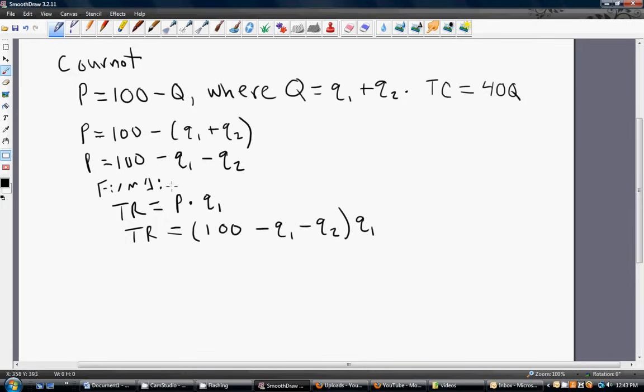What you see I did here was substituting the inverse demand equation in for P. And that's going to be all then multiplied through by the output of firm 1, Q subscript 1.